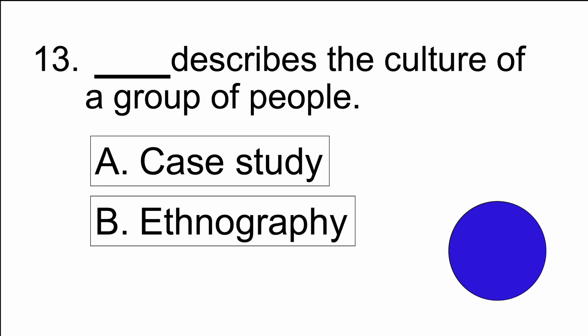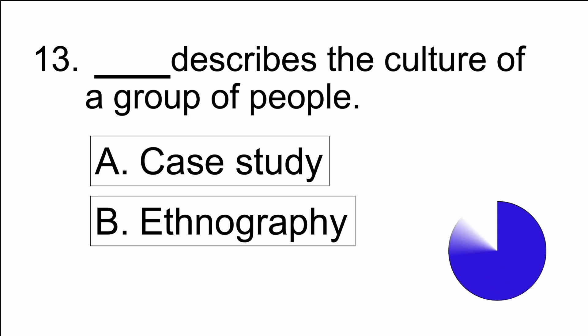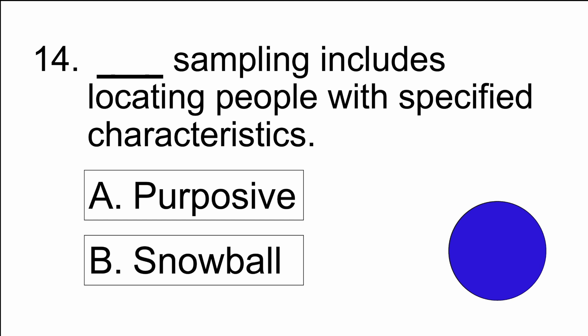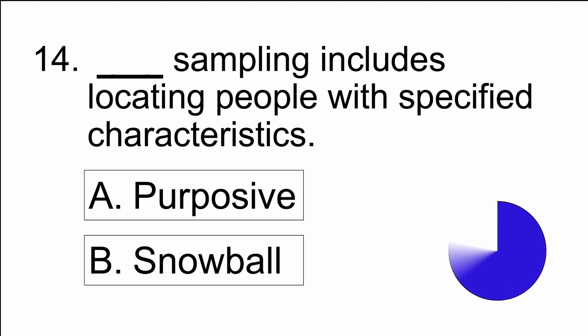The answer is B) ethnography. Number fourteen: blank sampling includes locating people with specified characteristics — A) purposive, or B) snowball. The answer is A) purposive.